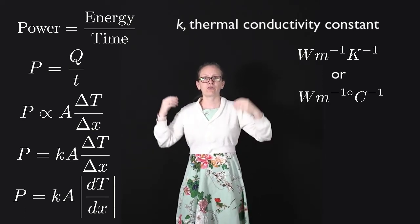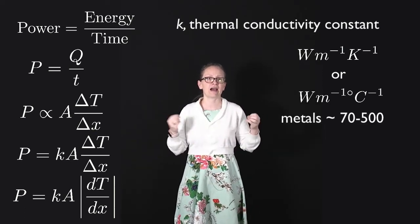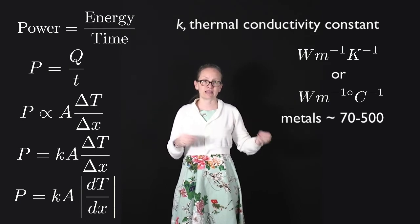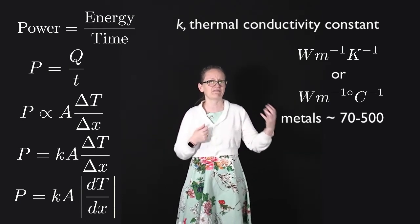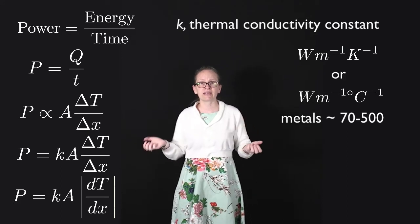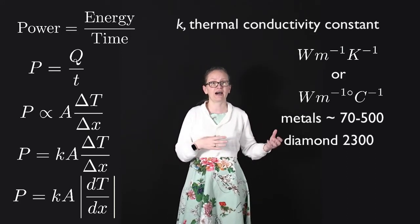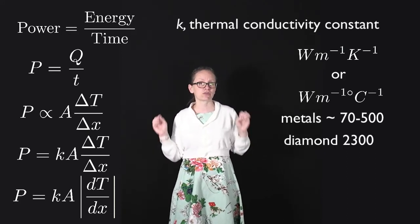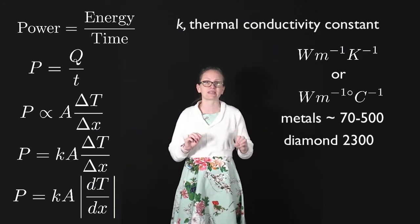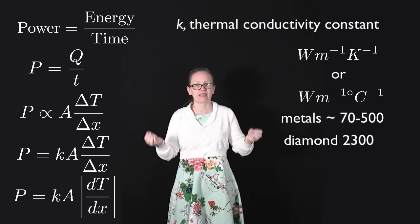So metals tend to have fairly high thermal conductivities, between about 70 and 500-ish. Diamond actually has a surprisingly high thermal conductivity of 2300, so diamond is an absolutely excellent conductor of heat.